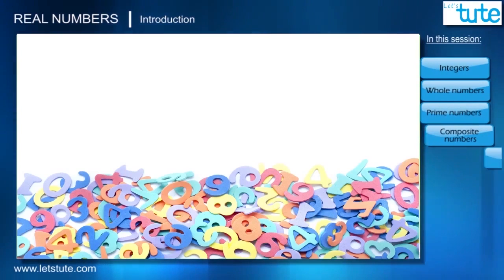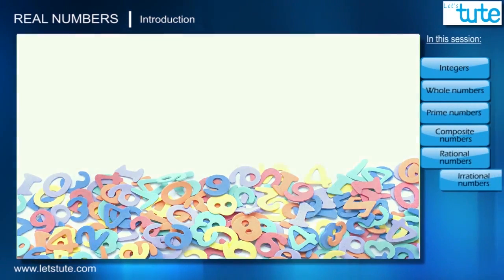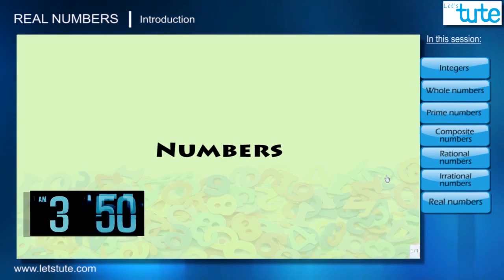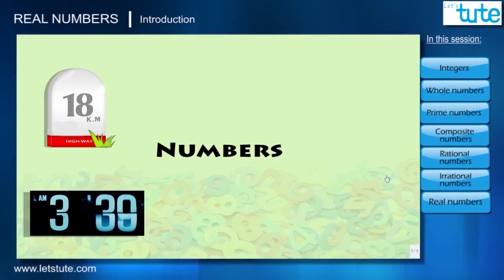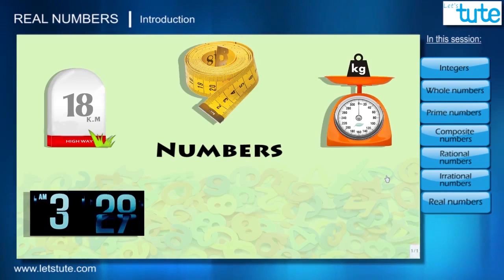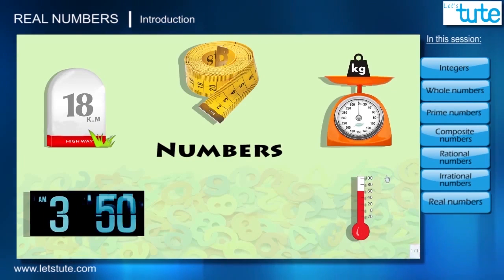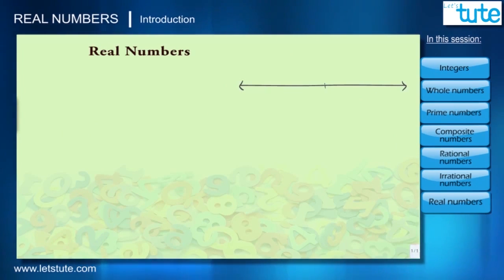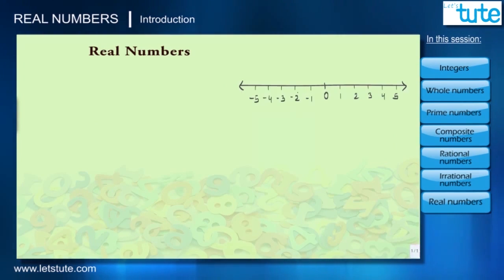Hello everyone. In this session we'll talk about numbers that we use in our everyday life in the form of time, distances, size, weight, temperature, etc. In mathematics, all these numbers can be represented on a number line, so they are called real numbers. In the middle of the number line we have the number 0.